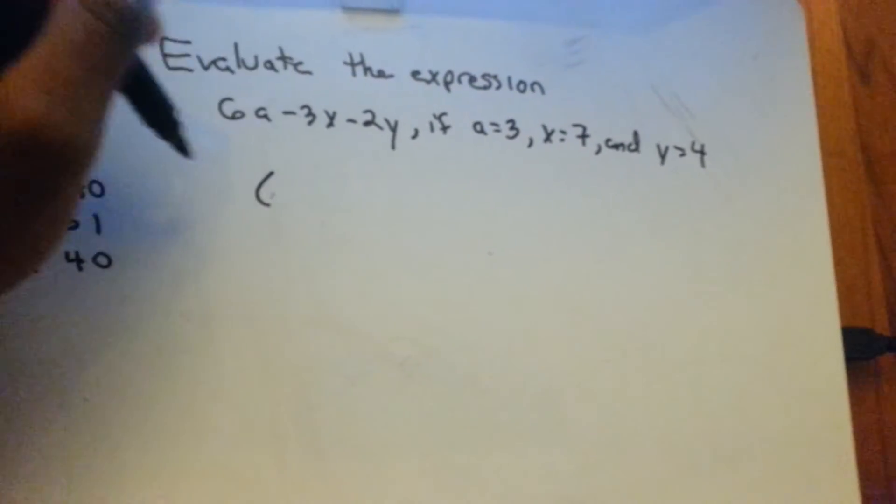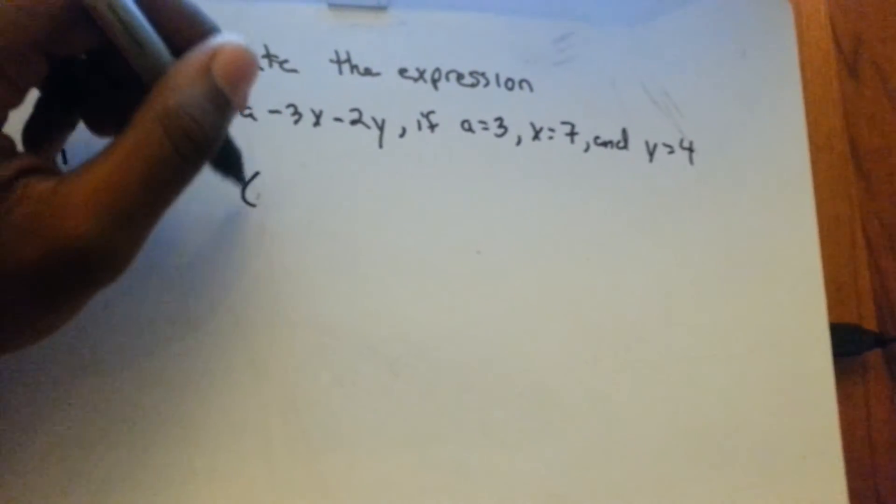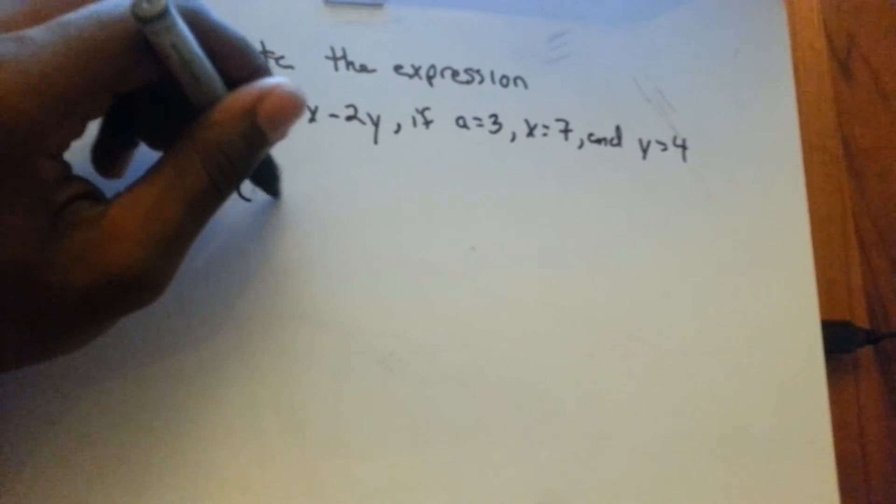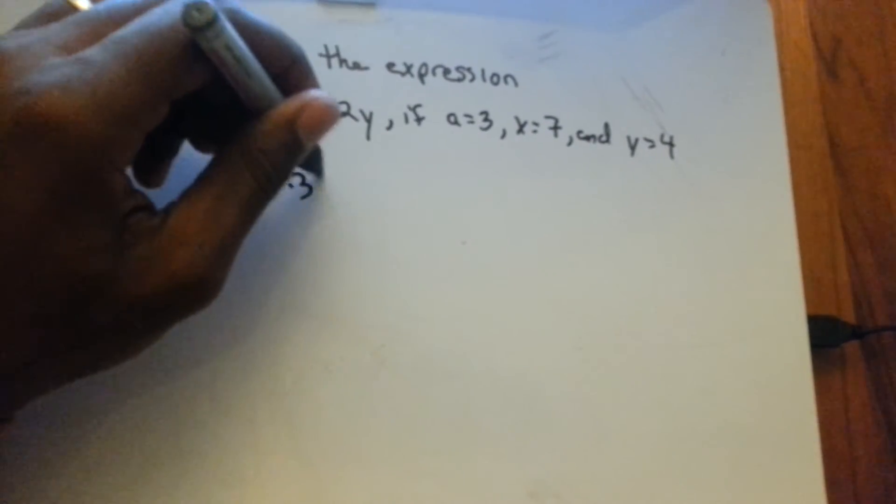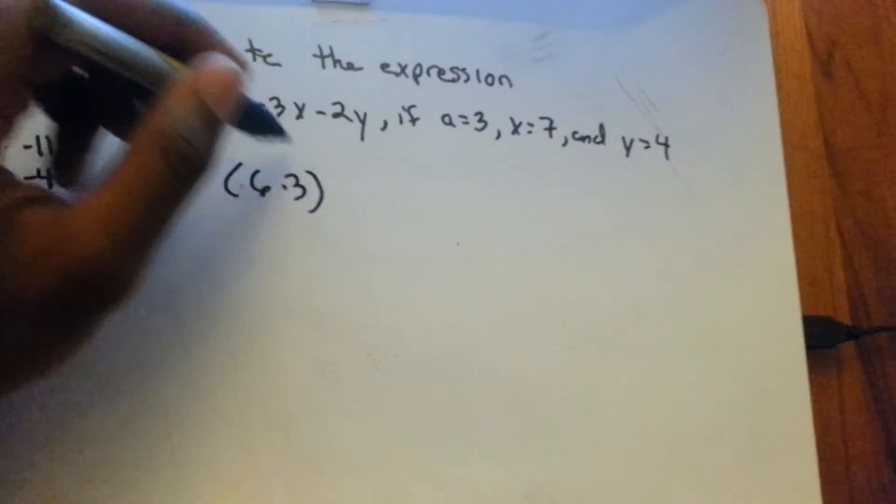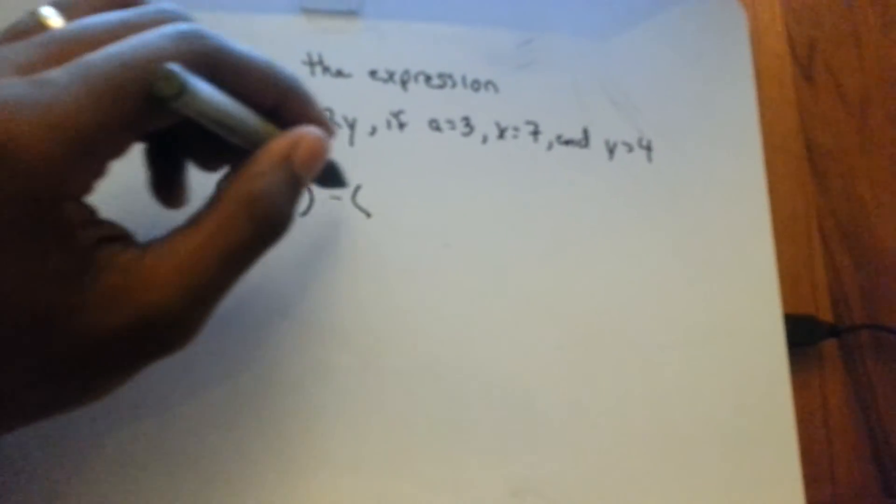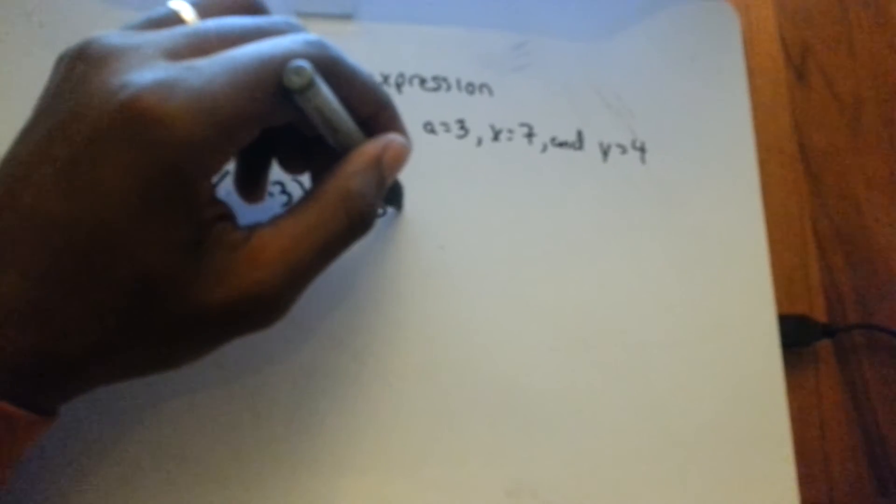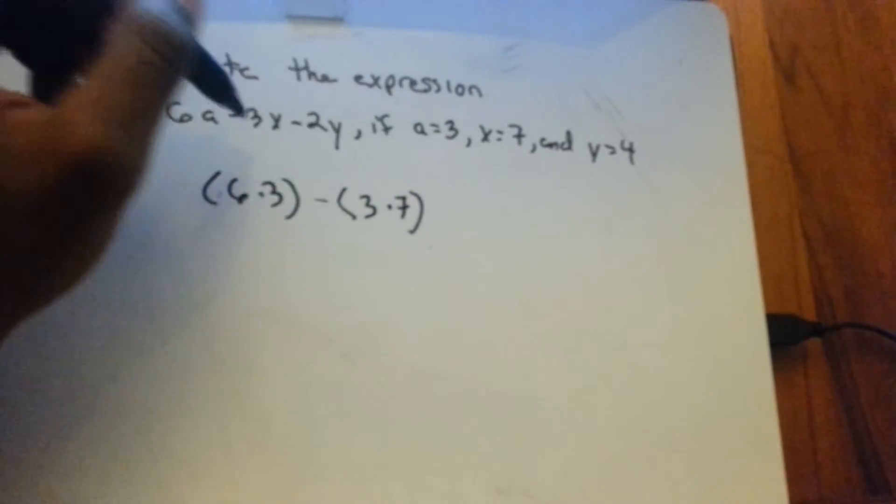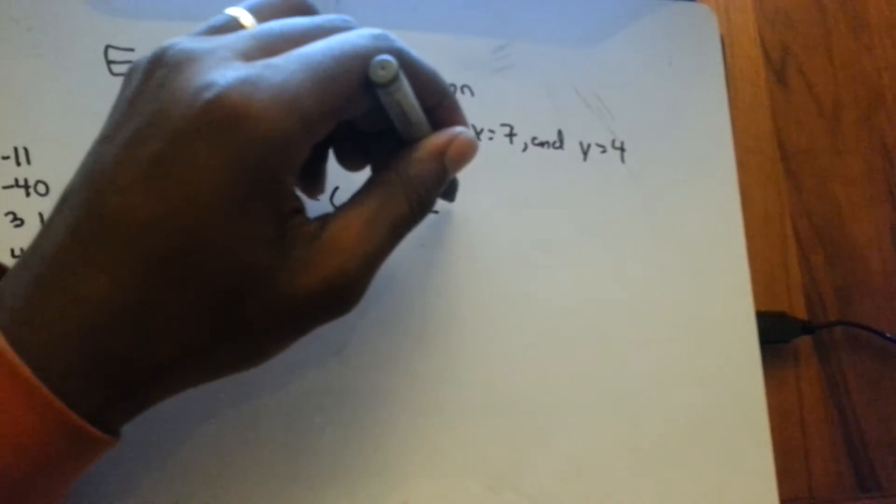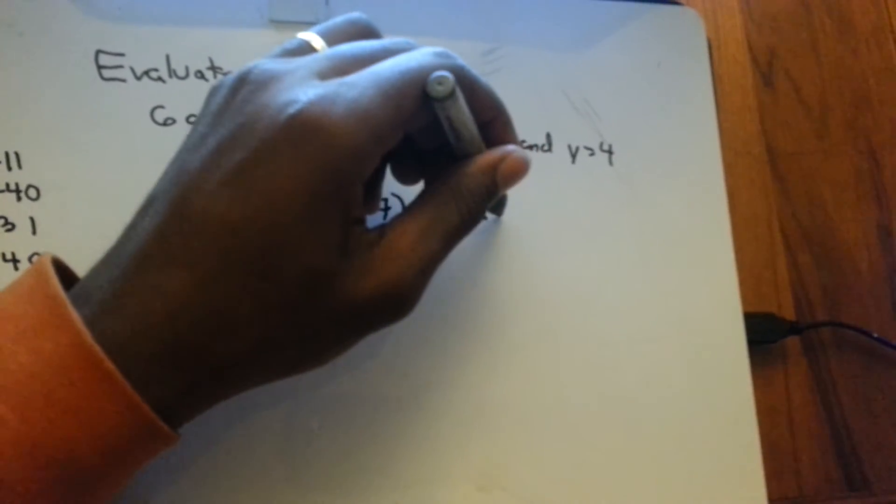I use parentheses just to make sure I don't confuse myself and do something wrong. So we've got 6 times a is 3, and then there's a minus sign, and then the 3x. So 3 times x is 7, close parentheses, and then minus the 2y, minus 2 times y equals 4.